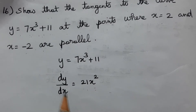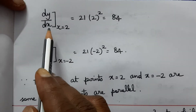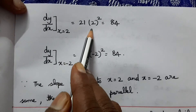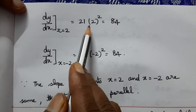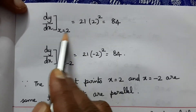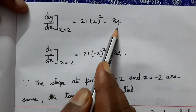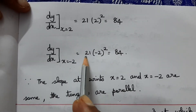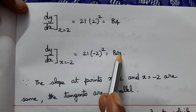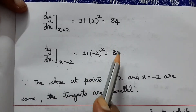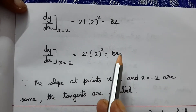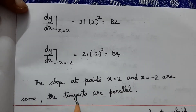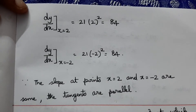Substituting x = 2: slope = 21(2)² = 21 × 4 = 84. Substituting x = -2: slope = 21(-2)² = 21 × 4 = 84. Since both slopes are equal to 84, the tangents at x = 2 and x = -2 are parallel.